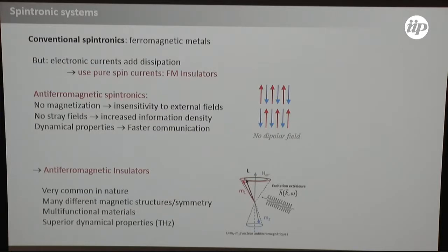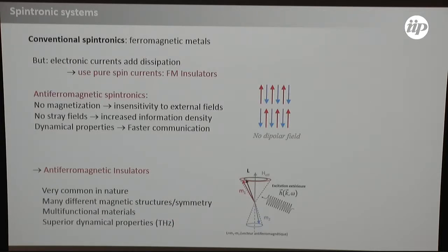The best of the two worlds is to combine them and go to antiferromagnetic insulators. They are very common in nature — most magnetic compounds are antiferromagnets and most of them are also insulators, so there is a huge choice with many different structures and symmetries to play with. Also the damping in an insulator is much reduced compared to a metallic system because we do not have conduction electrons, giving superior dynamical properties.